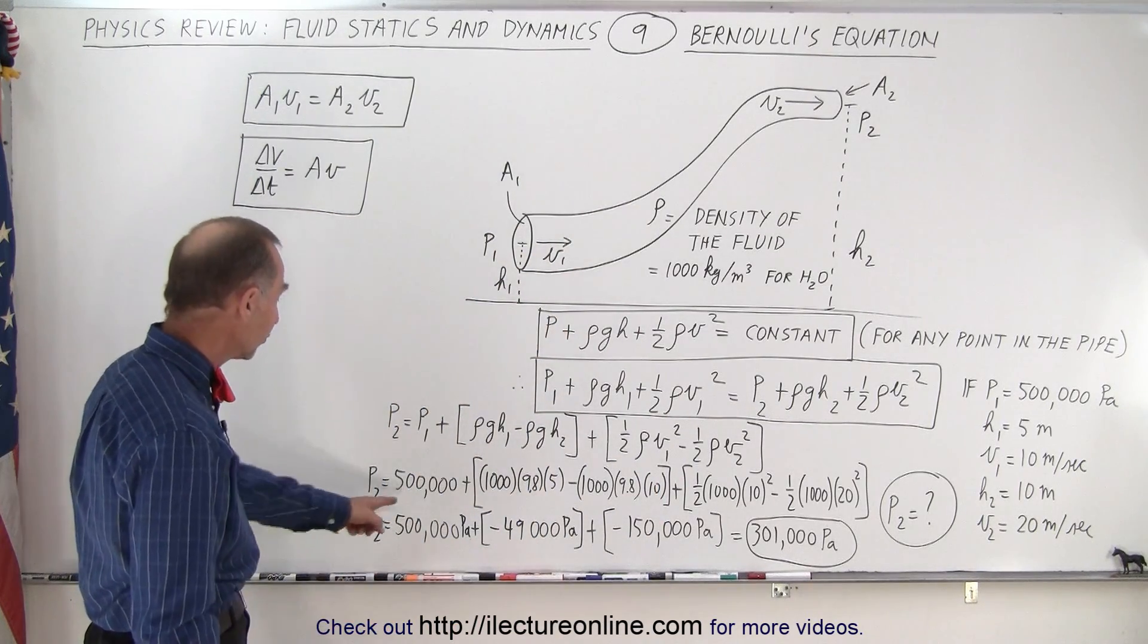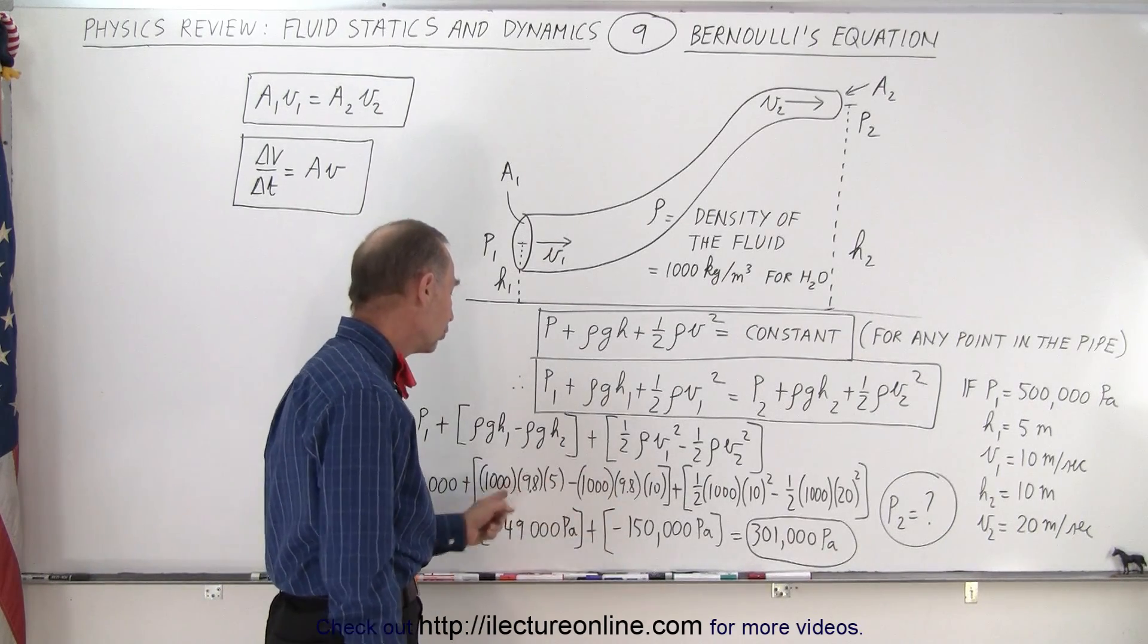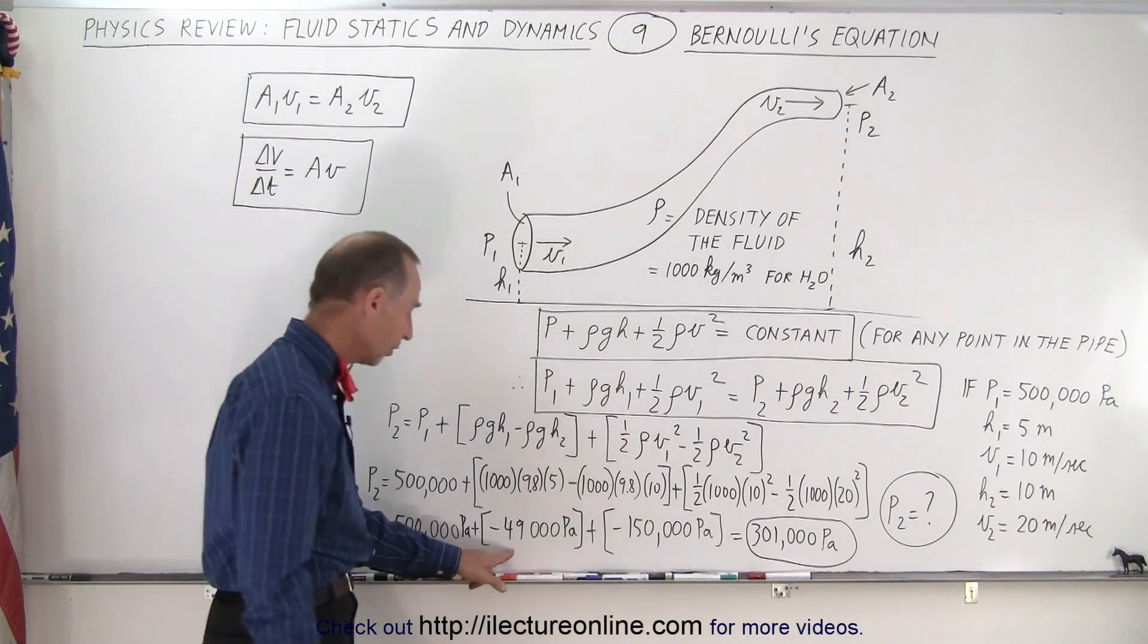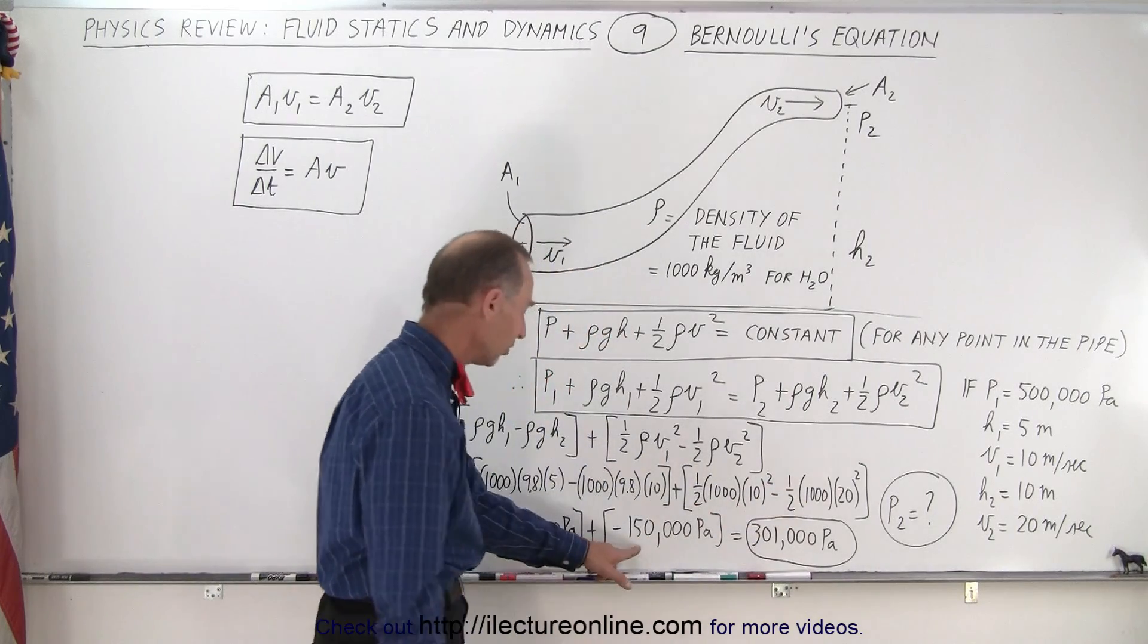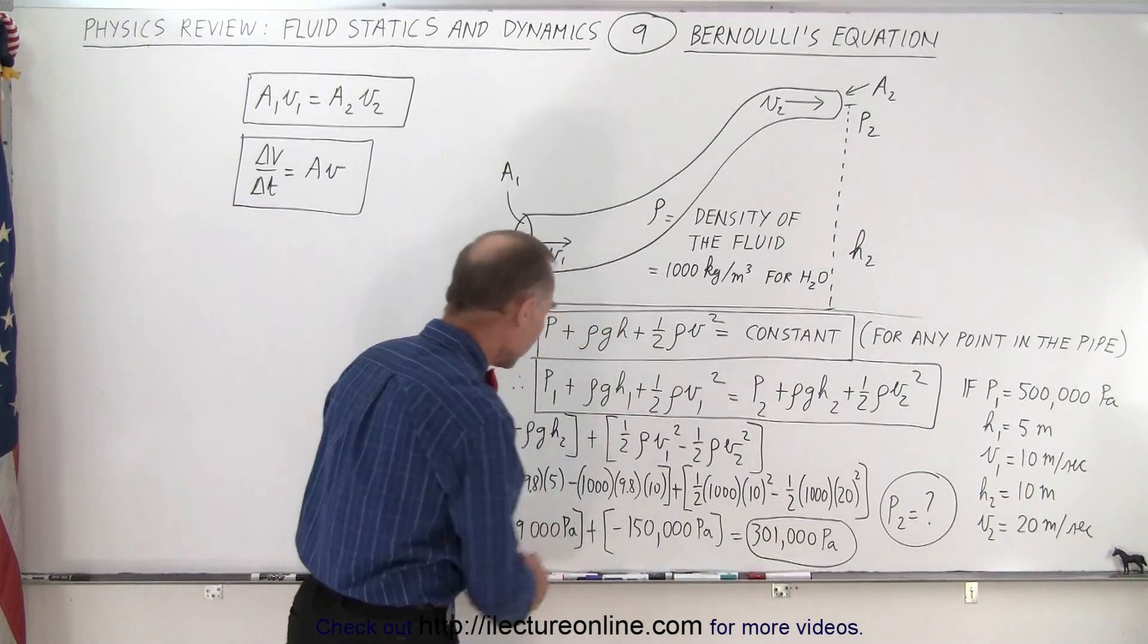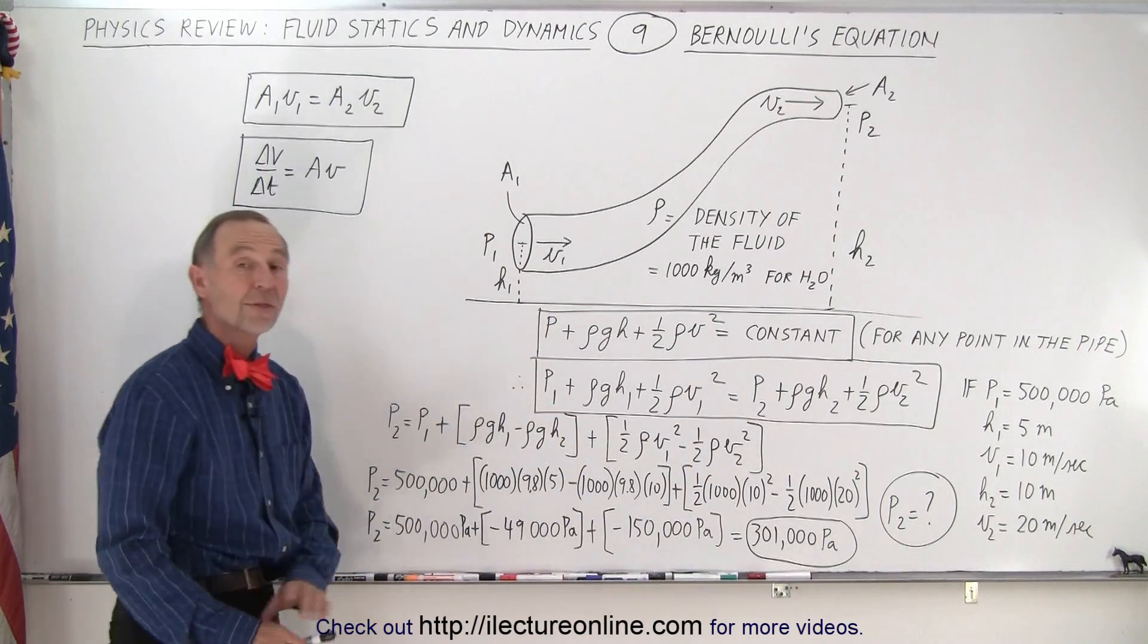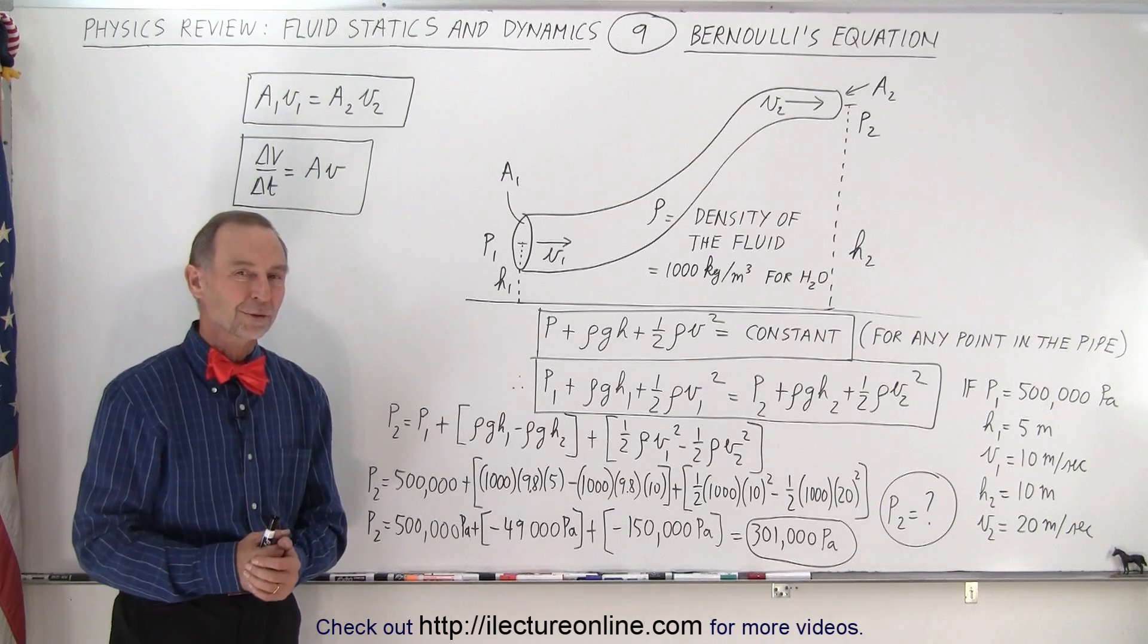When we plug in all the numbers, notice that was the pressure at point one. The difference in the pressure due to the two locations in height—since we gain height we have a drop in the pressure—and here because we have an increase in velocity we have another drop in the pressure. When we add them all up, we can then calculate the final pressure. In that case it will be 301,000 pascals. So a very typical example of how to use Bernoulli's equation.